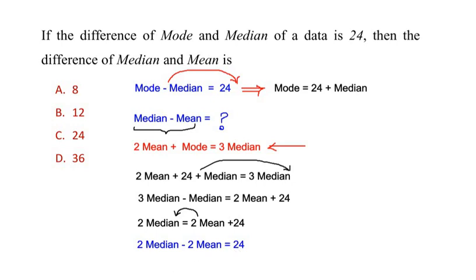Now we can see that the 2 is common in the terms median and mean, so we can take it out and write the median and mean inside the bracket. This is equal to 24. Now we are going to move the 2 on the other side of the equation.